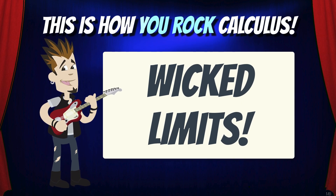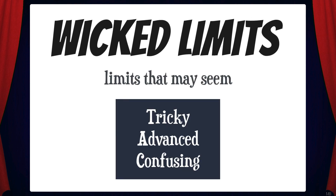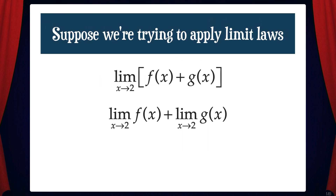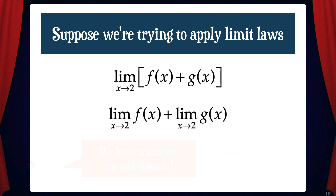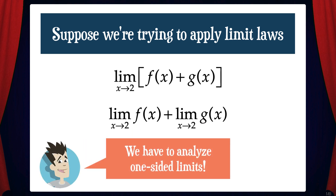Hey everybody, in this video we're going to talk about wicked limits. Wicked is a term that I like to use to describe limits that may seem tricky, advanced, or quite confusing. What I mean by that is suppose we're trying to apply limit laws to solve a limit and one of the functions — or both of the functions — is discontinuous at the x value in question. It's tempting to just say that the entire limit does not exist, but that's not always true. In these situations, we have to analyze one-sided limits to determine what's happening on both sides of the x value in question. That will help us determine the correct limit. Let's dive in and look at some examples.